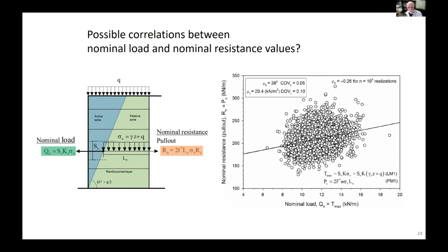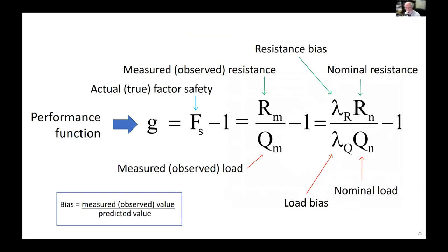In order to proceed further, we introduce a performance function G, equal to the true factor of safety minus one. So if the factor of safety is one, G equals zero. We can imagine this true factor of safety as being the ratio of a true resistance value divided by a true load value, minus one.